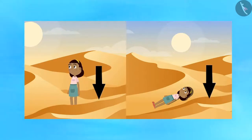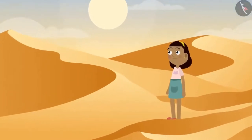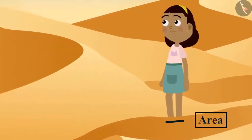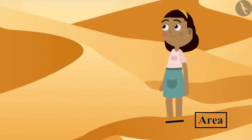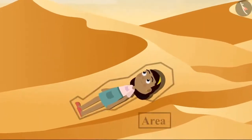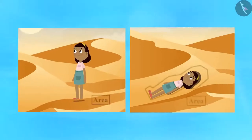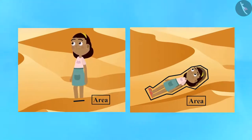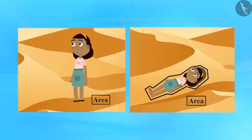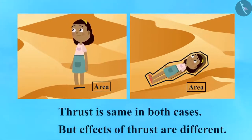Now let's understand how thrust is related to pressure. Going back to the desert example: when you are standing on the sand, the force acts on an area equal to the area of your feet, whereas when you are lying on the sand, the force acts on an area equal to the area of your body. The contact area is larger in the second case, so the effects of the same force acting on different areas are different. Thrust is the same in both cases, but its effects are different.